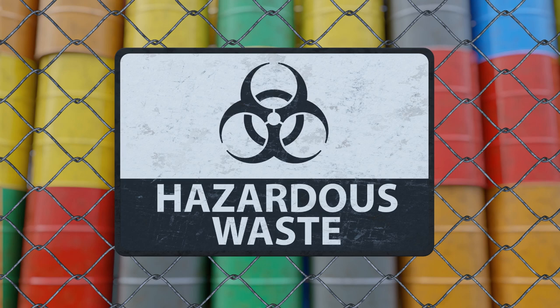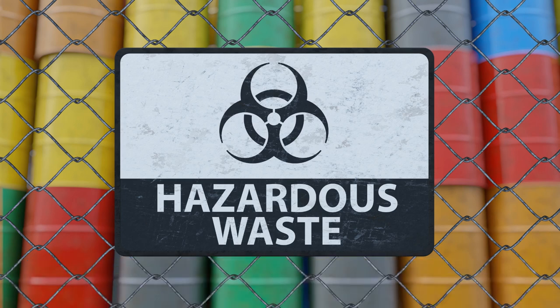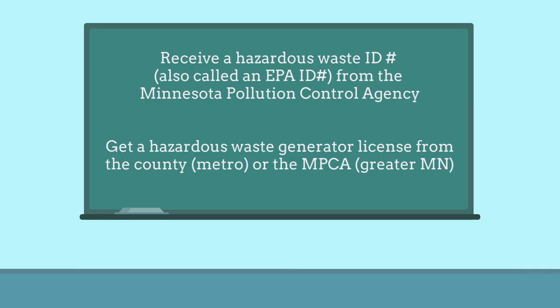To dispose of hazardous waste safely and legally, follow these steps. Evaluate your generated waste, particularly the type and amount, and use this evaluation to determine your generator size. Receive a hazardous waste ID number, also called an EPA ID number, from the Minnesota Pollution Control Agency. Get a hazardous waste generator license from the county if you're in the metro area, or from the MPCA in Greater Minnesota. Self-transport or ship waste to a permitted hazardous waste treatment facility, or treat waste at your facility, depending on your hazardous waste generator size.